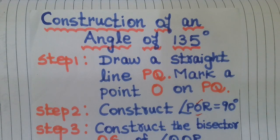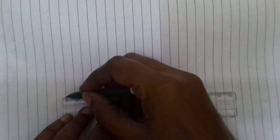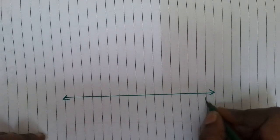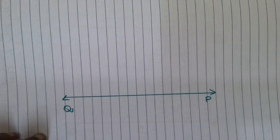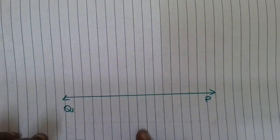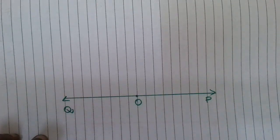Construction of an angle of 135 degrees. First step: draw a straight line PQ. Mark a point O on PQ.